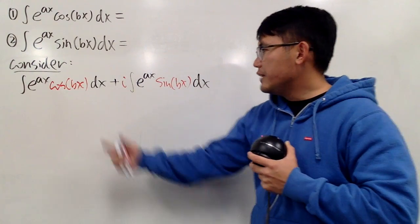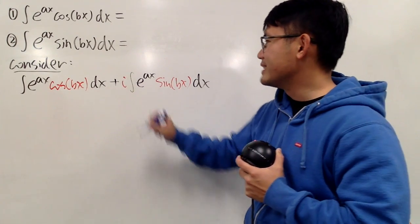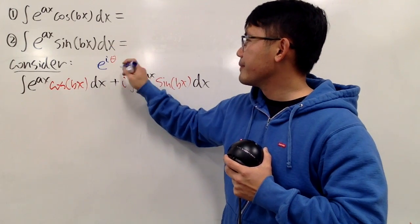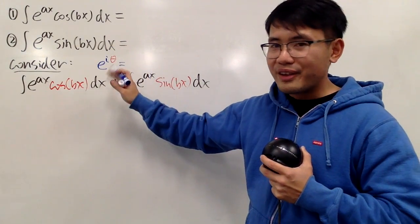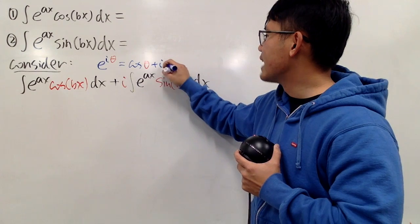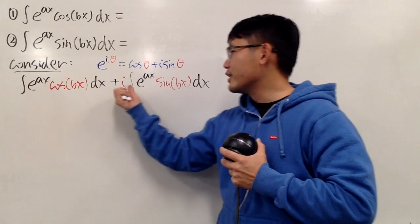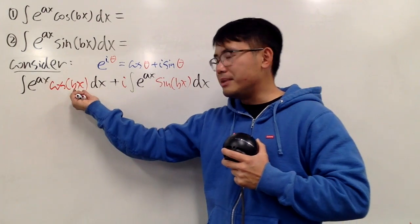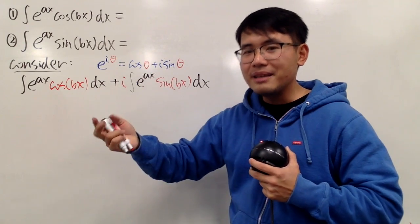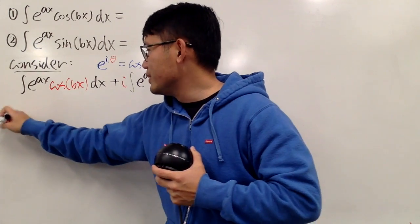Now check this out. If you look at the red part, recall Euler's formula: e to the iθ equals cosine θ plus i times sine θ. If you take θ as bx, then cosine bx plus i times sine bx together gives us e to the i·bx. So we can go back to e to the ibx.